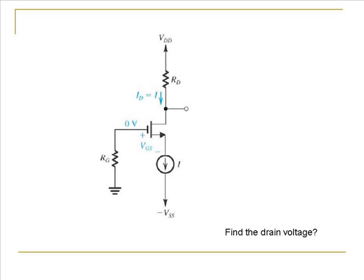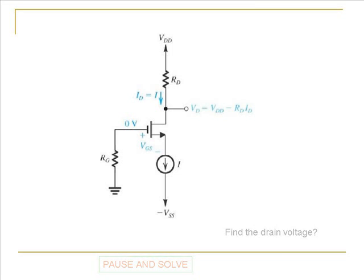Next, what would the drain voltage be? The drain voltage is going to be the power supply voltage minus the drop across the resistance connected to the drain, that is Rd. Therefore, the drain voltage is going to be Vdd minus Rd times Id.